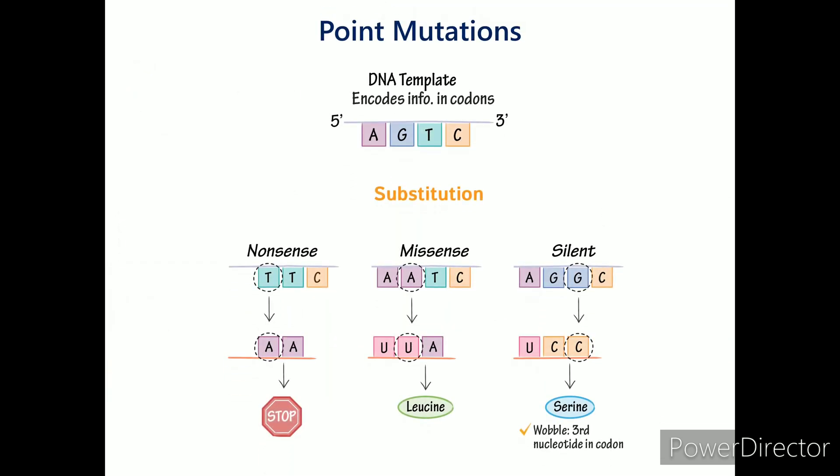Base Substitutions. Single base substitutions are called point mutations. We call the point mutation that causes sickle cell disease a classic example. Point mutations are the most common type of mutation and there are two types.